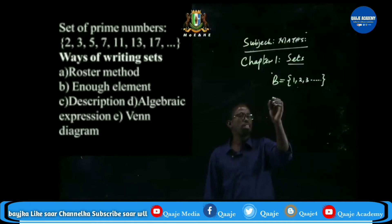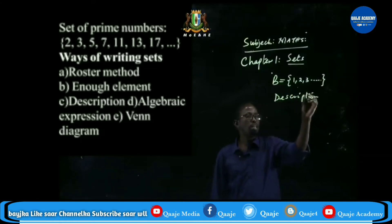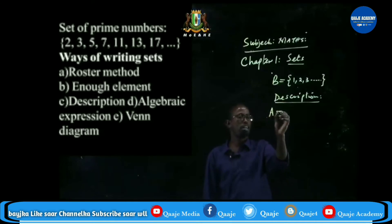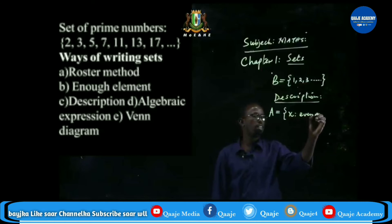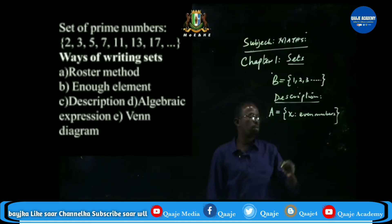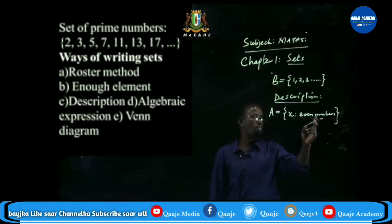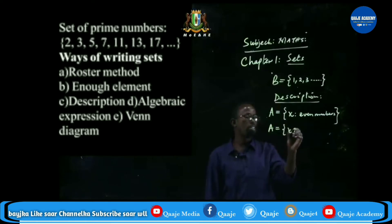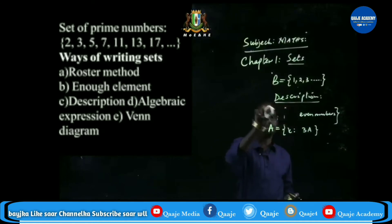Method number three is by description. You describe the set. For example, set A contains all even numbers — you write {x | x is an even number}. Another example: instead of writing all names of a certain class, you just say set A contains {x | x represents all students in Form 3A}. This is another way of writing sets by description.